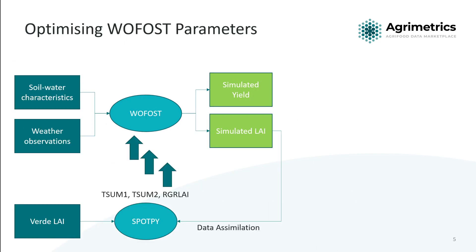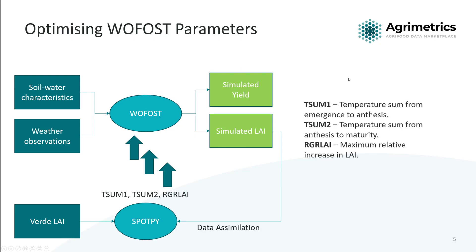This is where we bring in our data assimilation strategy. We're trying to optimize some WoFost parameters — we're only optimizing three at the moment because we want to avoid overfitting. These are around the temperature days required for a plant to reach maturity and the maximum relative increase in leaf area index.